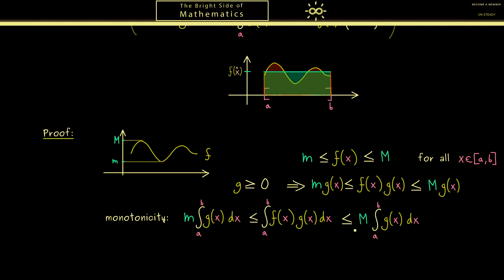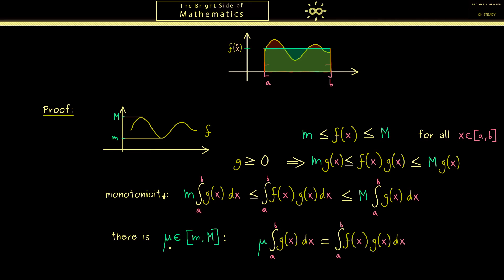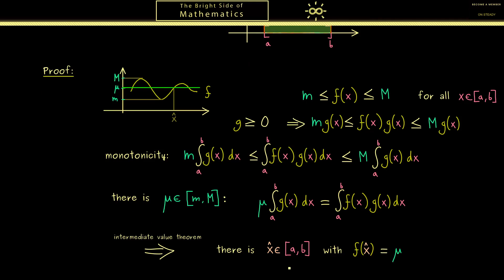We can choose a factor in between m and M such that we have equality, and let's call this factor μ. More precisely, μ times the integral of g equals the integral of f·g. Now because μ lies between the minimum and the maximum of f, we can apply the intermediate value theorem — and we can apply it because f is continuous. The intermediate value theorem gives us an x̂ such that f(x̂) equals μ, and with this equality the theorem is proven. Continuity of f was crucial here.